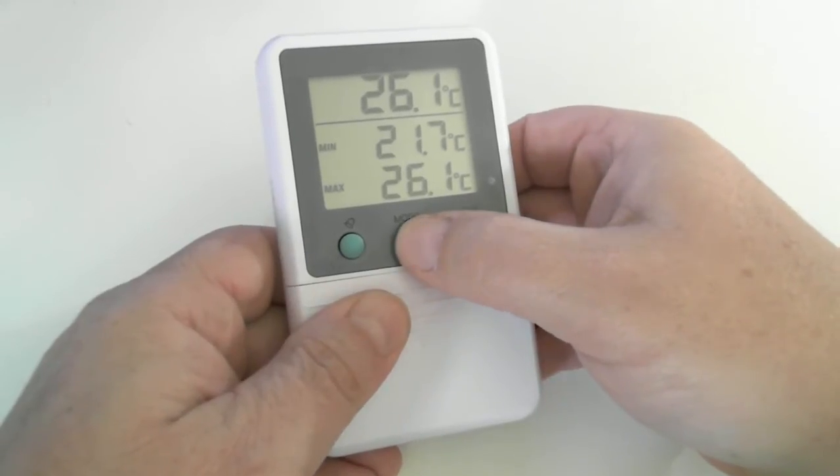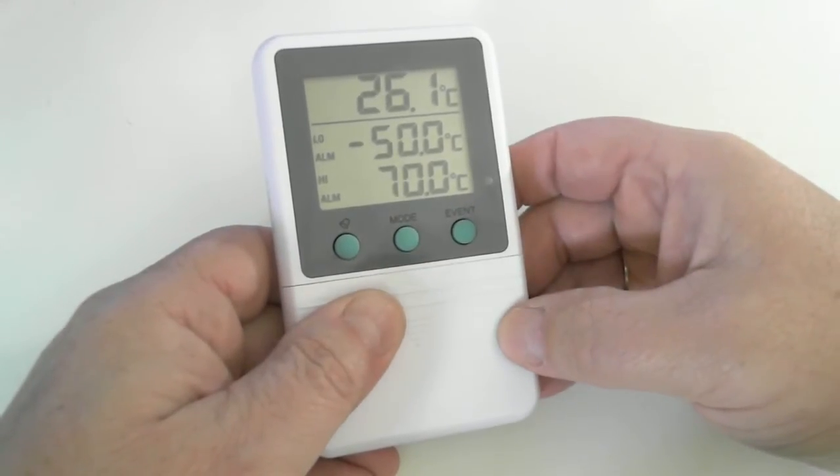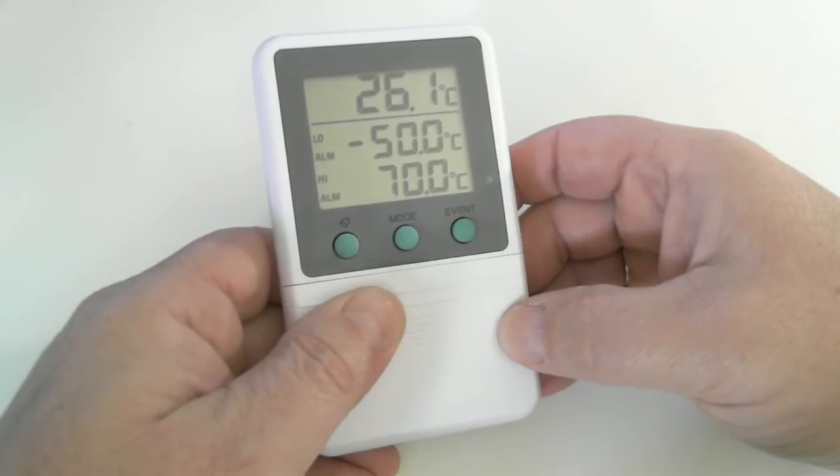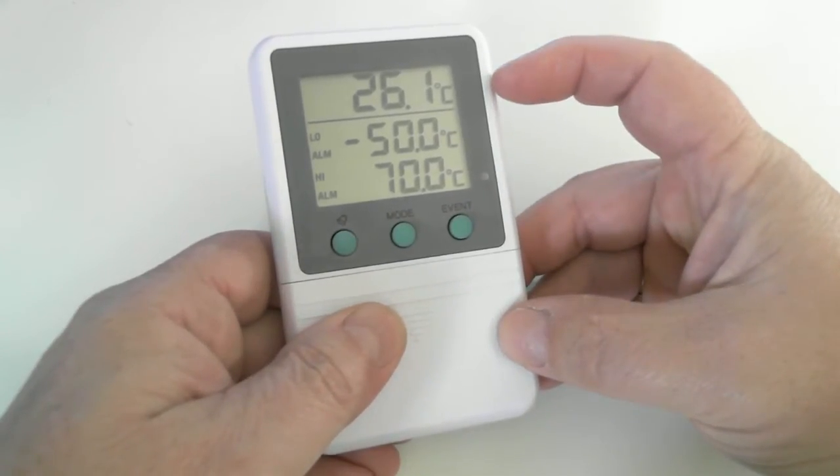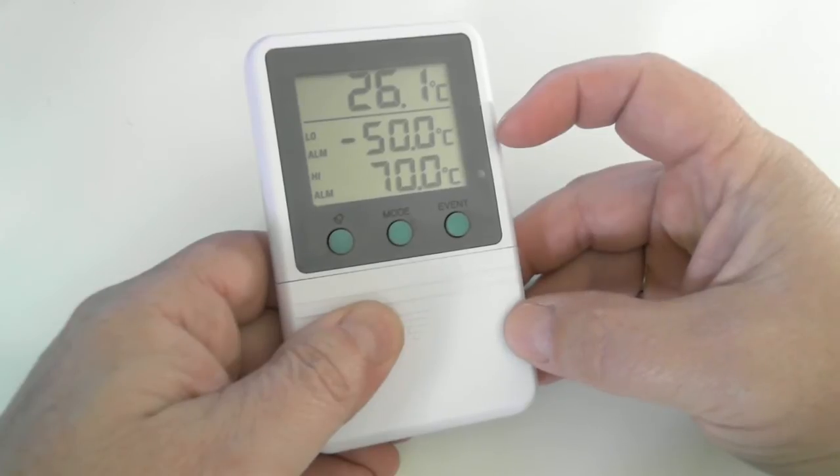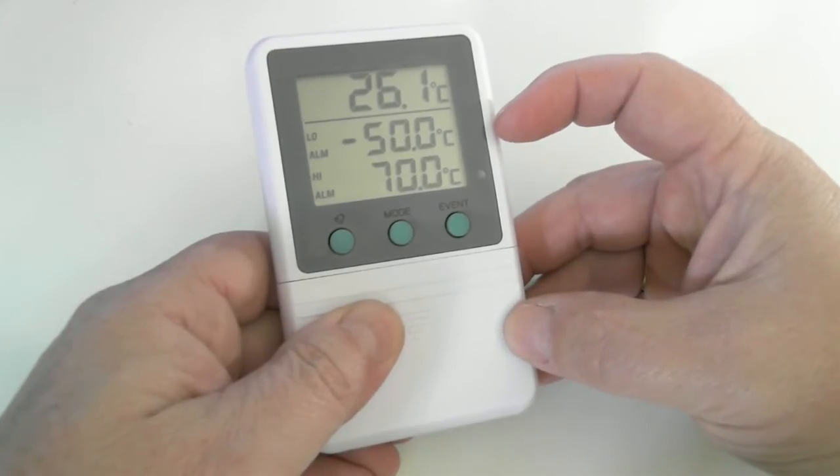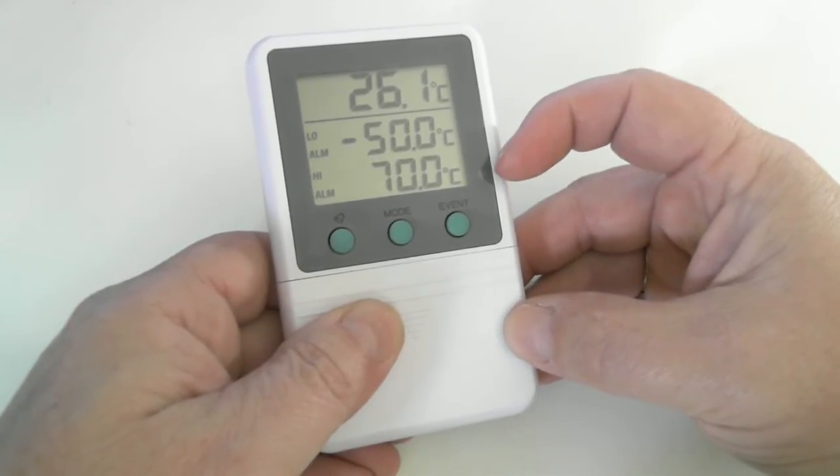Press the mode button and we're now in the alarm display. It's currently showing the current temperature at the top, the low alarm set point, and at the bottom is the high alarm set point.